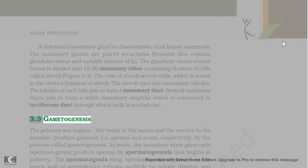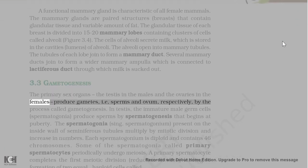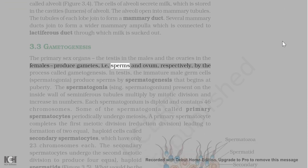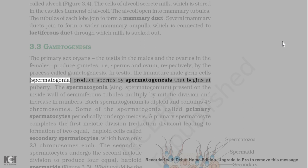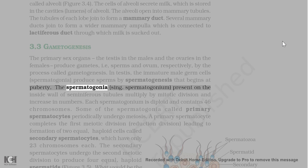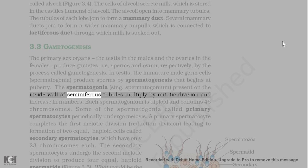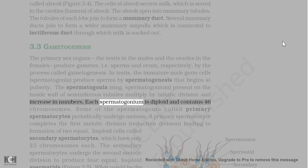The primary sex organs — the testis in males and the ovaries in females — produce gametes (sperms and ovum respectively) by the process called gametogenesis. In testis, the immature male germ cells (spermatogonia) produce sperms by spermatogenesis that begins at puberty. The spermatogonia present on the inside wall of seminiferous tubules multiply by mitotic division and increase in numbers. Each spermatogonium is diploid and contains 46 chromosomes.